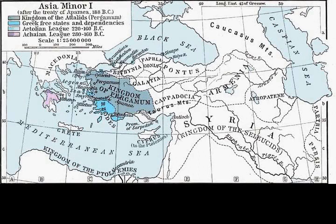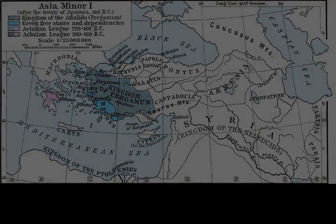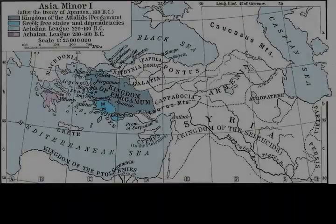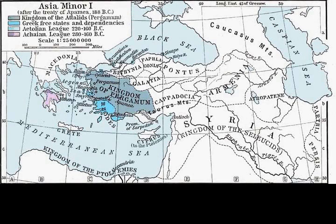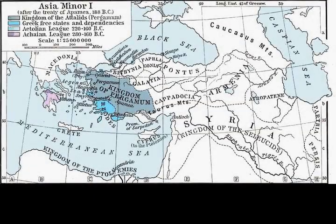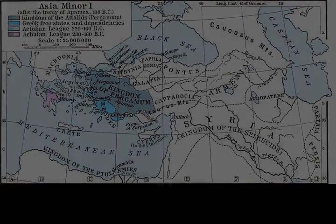In spring 190 BC, the Rhodians dispatched 36 ships under Pausistrates to reinforce the Romans. The Rhodians were blockaded by Polyxinidas at Panormus Harbor, Samos. Polyxinidas destroyed the Rhodian fleet through treachery — a Rhodian exile himself, he convinced Pausistrates that he intended to surrender the Seleucid fleet to the Rhodians. Polyxinidas then killed the Rhodian admiral, his erstwhile political opponent, while also capturing 20 ships and sinking nine.